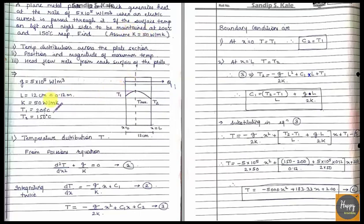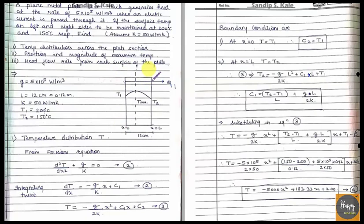So T1 is given as 200°C and T2 on the right side is 150°C. We are supposed to find out three things: the temperature distribution across the plate, second the position and magnitude of the maximum temperature, and lastly the heat flow rate at each surface — the left face and the right face.